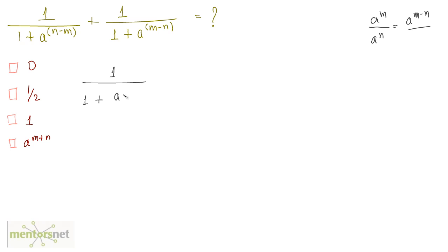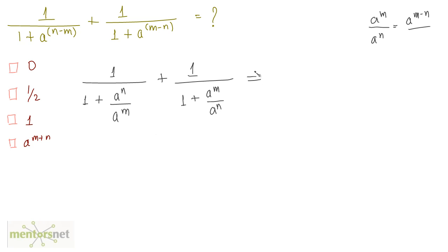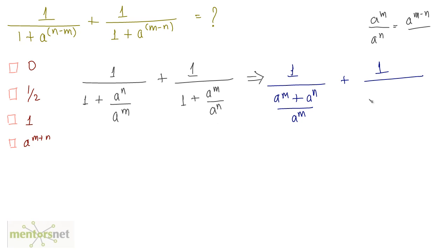So it is a raised to power n divided by a raised to power m. Similarly, on the right-hand side of the plus, we have 1 by 1 plus a raised to power m minus n, which can be written as a raised to power m by a raised to power n.